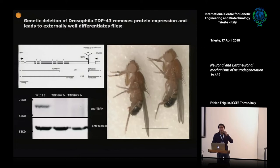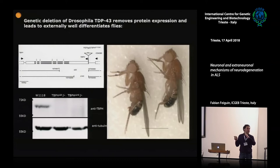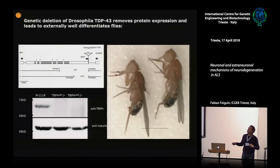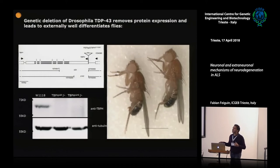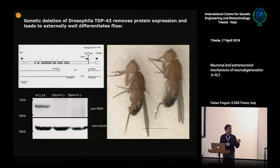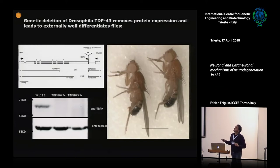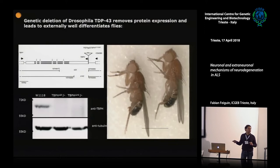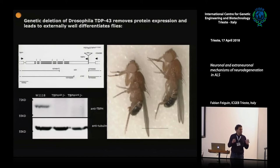What we did was generate genomic mutations inside the locus of the Drosophila gene, which is called TBPH. We generated antibodies and mapped deletions by PCR. We saw that in two different mutant alleles, the protein is gone, indicating these are genetic nulls. The phenotypes these flies show — externally, it's very difficult to know which is the wild type and which is the mutant. They look identical externally.